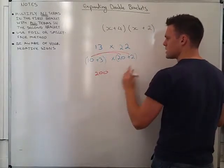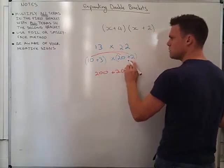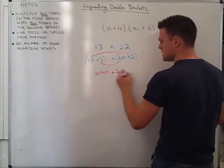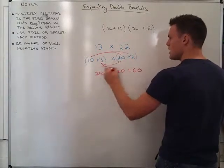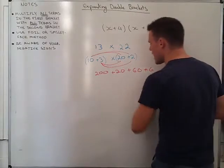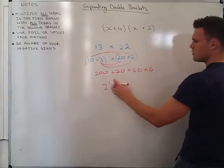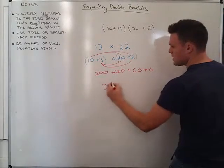I will do 10 times 20 giving me 200. I will do 10 times 2 giving me 20. I will do 3 times 20 giving me 60. I will do 3 times 2 giving me 6. Then I will add all of this up, so that should give me 200 and I will add 86.